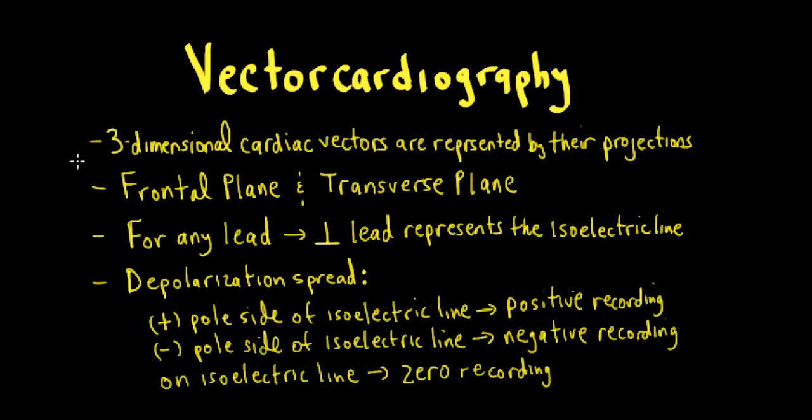so we can only represent their projections or shadows on a two-dimensional plane. The two planes we can illustrate the projections of the cardiac vector are the frontal plane and the transverse plane.